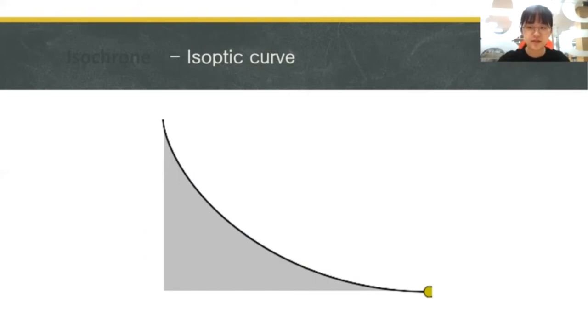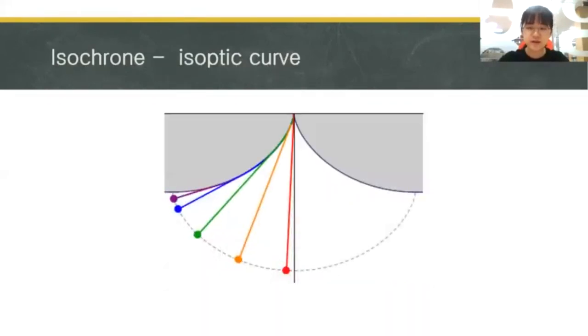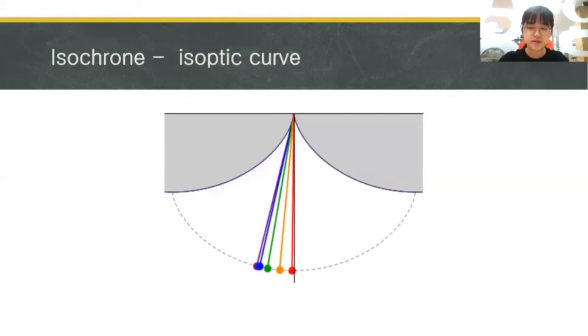We can show this as a distance duration graph, as you can see on the screen. This image shows the isochronism of pendular movement, which shows similarities with the cycloid curve.